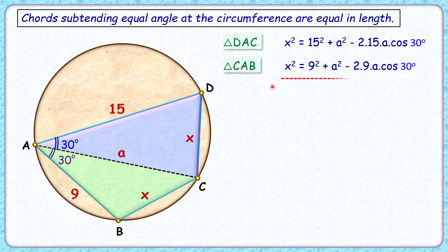Let's subtract these two equations. When subtracting, x² and x² will cancel, so LHS will be 0. RHS will be 15² minus 9², a² and a² will cancel, and we'll have -30a·cos 30° minus -18a·cos 30°. So we get -12a·cos 30°.